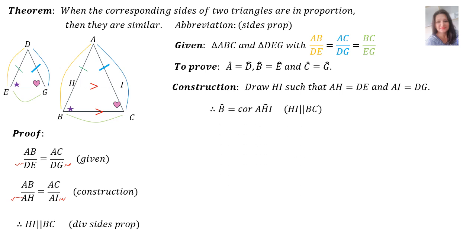Therefore, angle B is equal to the corresponding angle AHI, since HI is parallel to BC. And angle C is equal to the corresponding angle AIH. Therefore, triangle AHI — the little one inside the big one — is similar to the big one, ABC, because they are equiangular.